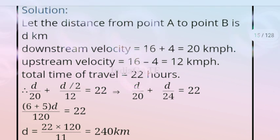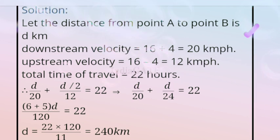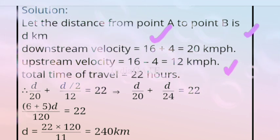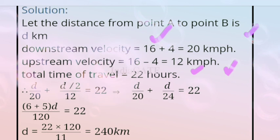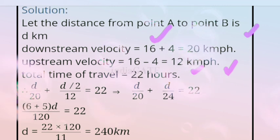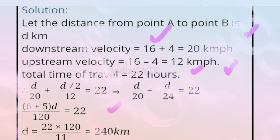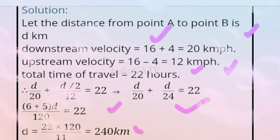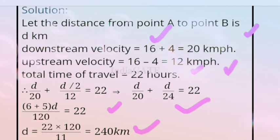Solution: downstream speed = 60 + 4 = 64 km/h... wait, downstream = 60 + 4 = 64, upstream = 60 - 4 = 56. Let distance A to B = d km. Total time: d/64 + (d/2)/56 = 22. Wait — correcting per transcript: downstream = 20 km/h, upstream = 12 km/h per solution. Equation: d/20 + (d/2)/12 = 22, solving gives d = 240 km. Take a screenshot for this solution.